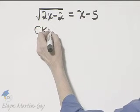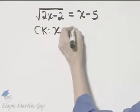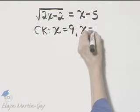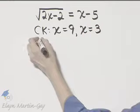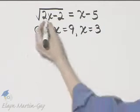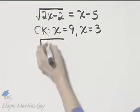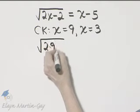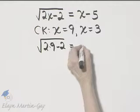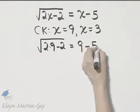We will check x equal to 9 and x equal to 3. Alright, let's start checking. If x is 9, for example, I'll have the square root of 2 times 9 minus 2, is that equal to 9 minus 5.